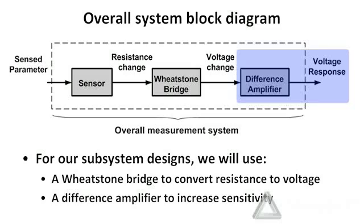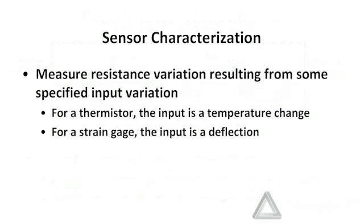We've had some practice with amplifiers in the previous lab assignment, and we'll use a different amplifier circuit in this one for reasons I'll explain later. For the sensor stage, the first thing we need to do is characterize the sensor — get an idea of how the resistance changes as a function of the input parameter. For a thermistor we'll change the temperature and observe the resistance change; for a strain gauge we'll deflect it and measure the resulting resistance change, which then becomes input to the next stage.